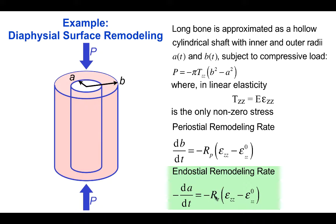The coefficients R_p and R_e represent the strain-dependent rates of periosteal and endosteal remodeling and are constants.